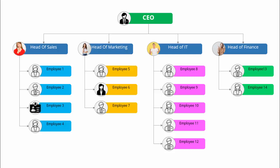In today's tutorial I'm going to show you how to create an org chart which can be reused any number of times. As you can see here, the example I've created has CEO at the top, then four managers reporting to him: head of sales, head of marketing, head of IT, and finance. Under each head you've got different employees. I've added the image — you just need to click and the image will be added, then click and the text will be replaced. It's so simple.